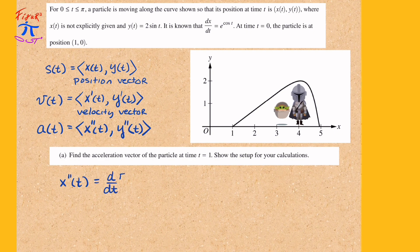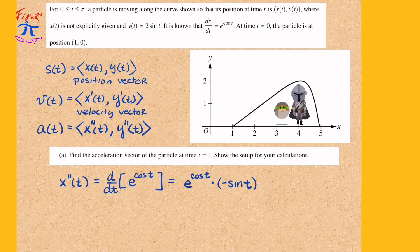Differentiating x with respect to t to find the second derivative — since they have already given us the first derivative — we take the derivative of e to the cosine t power. We will use the chain rule here to differentiate, giving us e to the cosine t times negative sine t, or negative sine t times e to the cosine t.